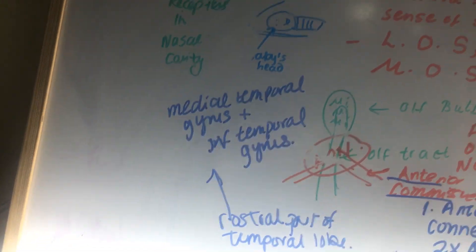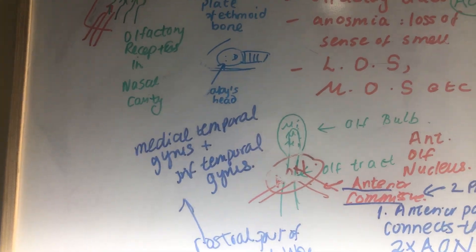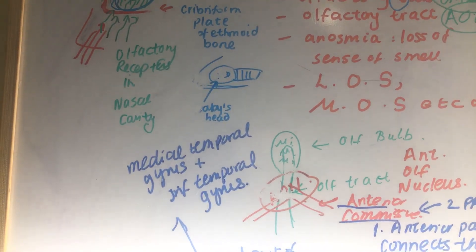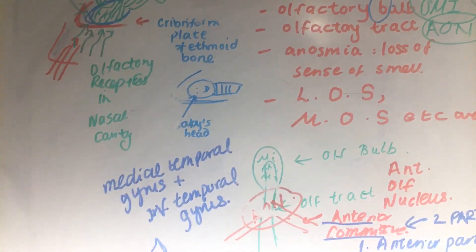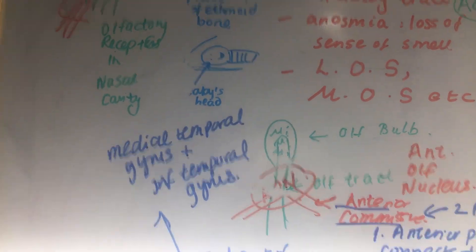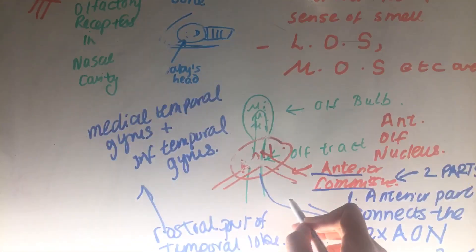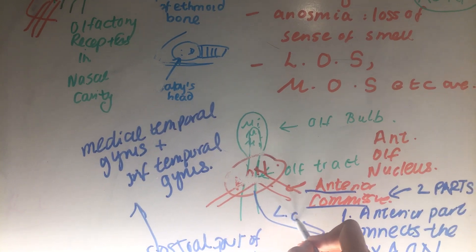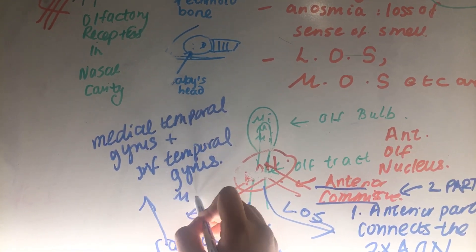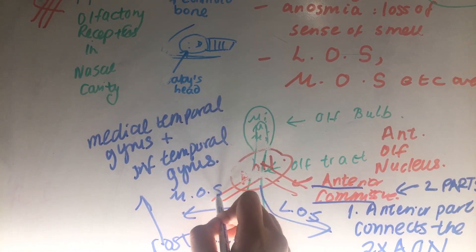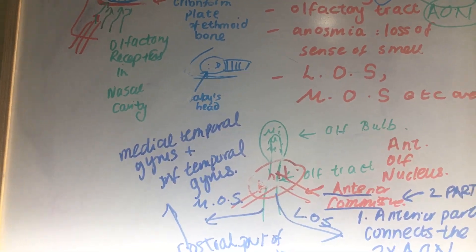That's all you need to know for the anterior commissure. The other things to know are the directions in which the lateral olfactory stria and the medial olfactory stria travel, which will be covered in the next part.